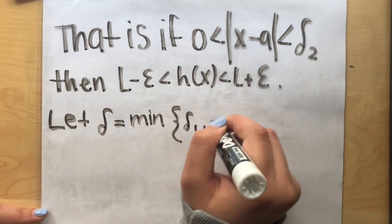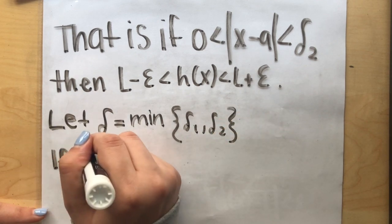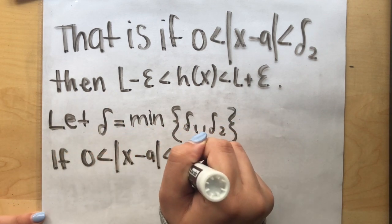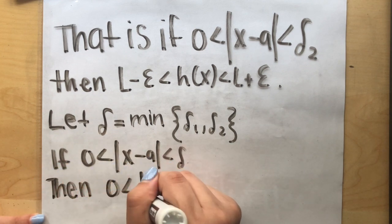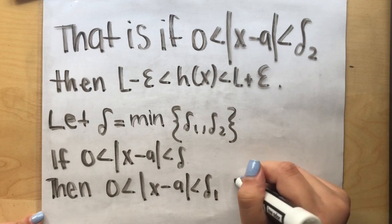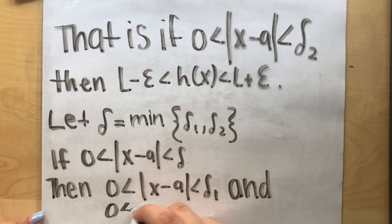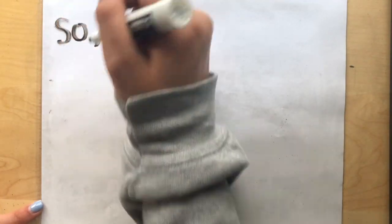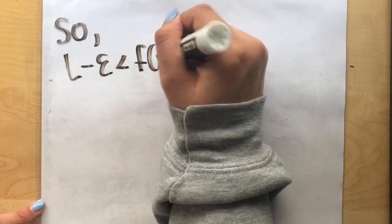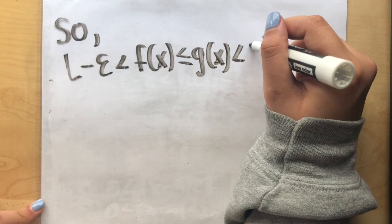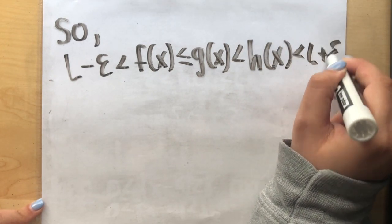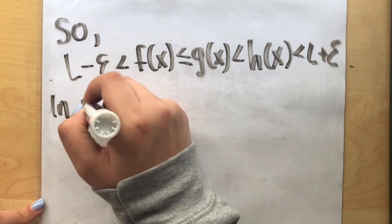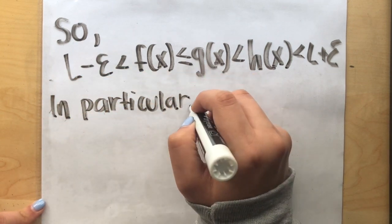Let delta equal the minimum between delta sub 1 and delta sub 2. If 0 is less than the absolute value of x minus a, which is less than delta, then L minus epsilon is less than f of x which is less than or equal to g of x which is less than or equal to h of x which is less than L plus epsilon.